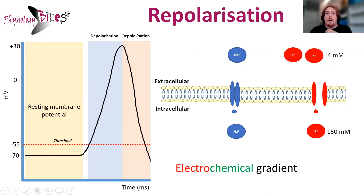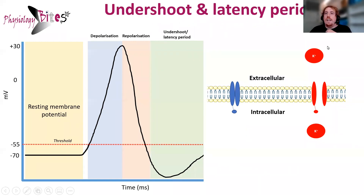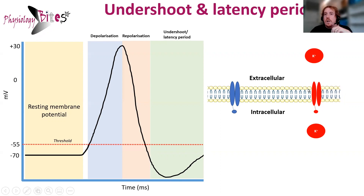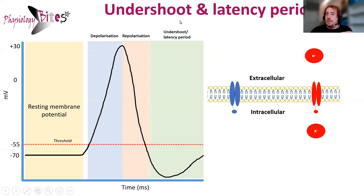This leads us to our undershoot. The undershoot is when these potassium channels stay open a little bit longer than needed, and the charge inside the cell actually ends up being lower than our resting levels. Once these potassium channels close, we start to get recovery to our resting levels because of all those factors which help maintain our normal resting membrane potential. But it does take time, and so this is what we call the latency period — meaning the neuron can't be activated within this latency period. It can only be activated when it's back to roughly its resting membrane potential.